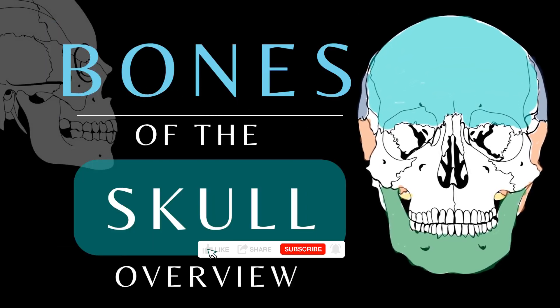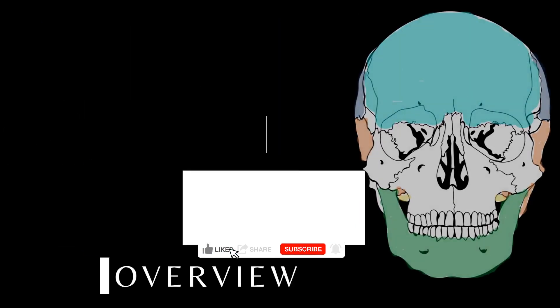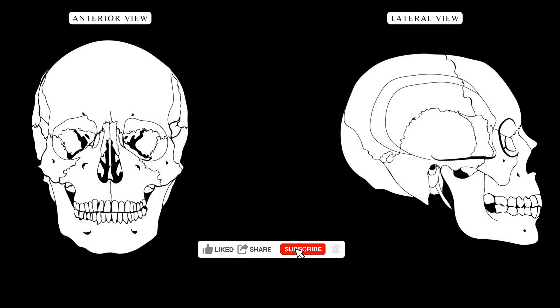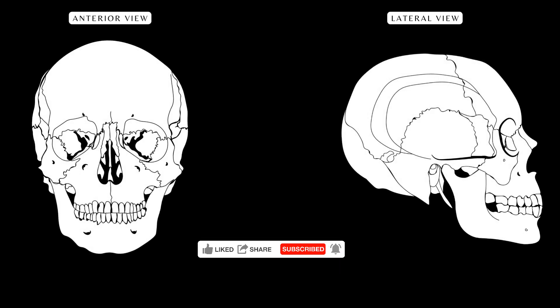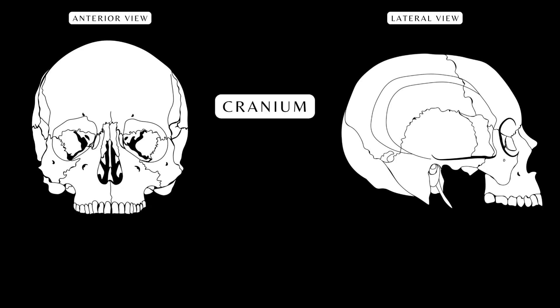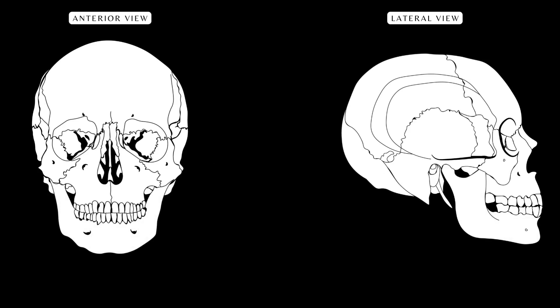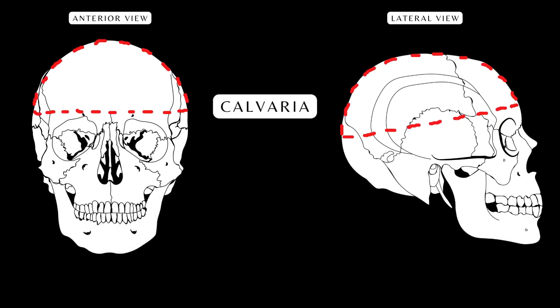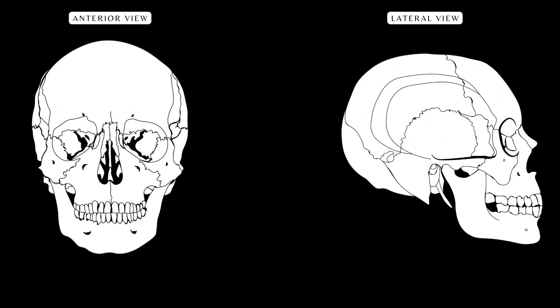Bones of the skull: an overview. Here is the anterior and lateral view of the human skull. Let's look at some important definitions. The term skull refers to all the bones including the mandible, while the cranium refers to the skull without the mandible. But often these anatomical definitions are not always observed. The calvaria is known as the vault or skull cap — the upper portion or roof of the skull that encloses the brain. The skull has 22 bones and can be divided into two groups.